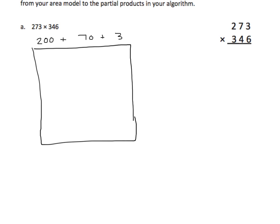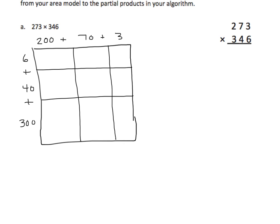I have two hundreds plus seven tens plus three ones. Now we're going to draw lines to partition our model into columns. Now we'll take the next factor. We're going to start with the ones place. We have six ones plus four tens, or forty, plus three hundreds. And we're going to partition this into rows. Now we'll begin our multiplication. As we have in the past, we're going to start with our six in the ones place and multiply each one of these digits, then go to the four and multiply each digit. We're going to work from right to left.